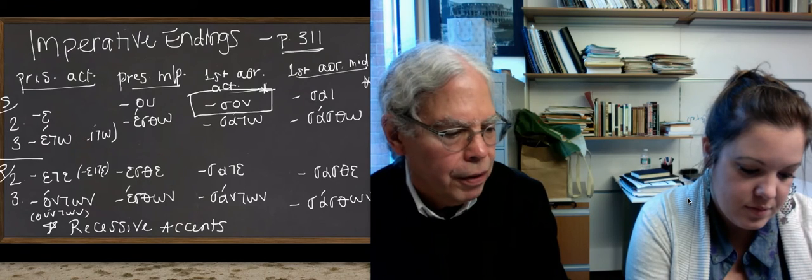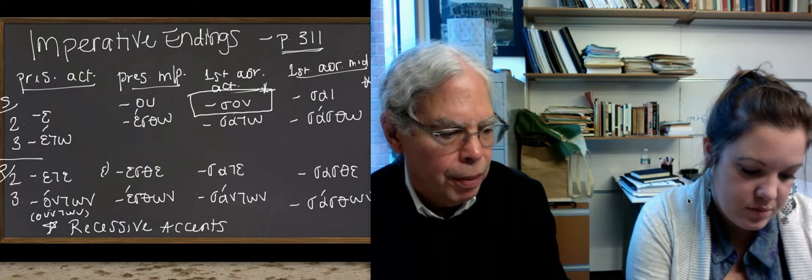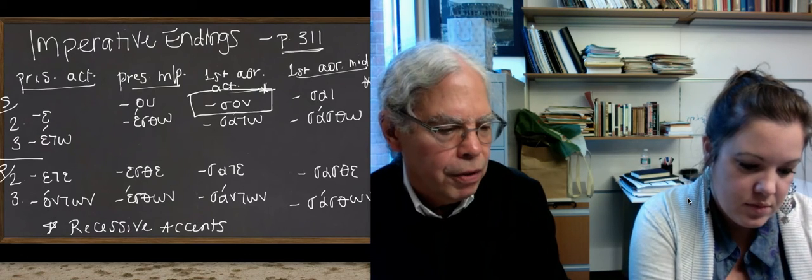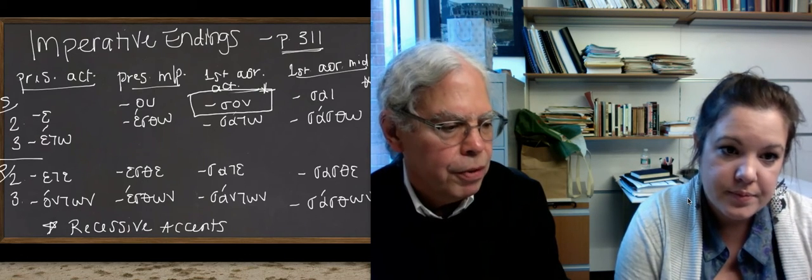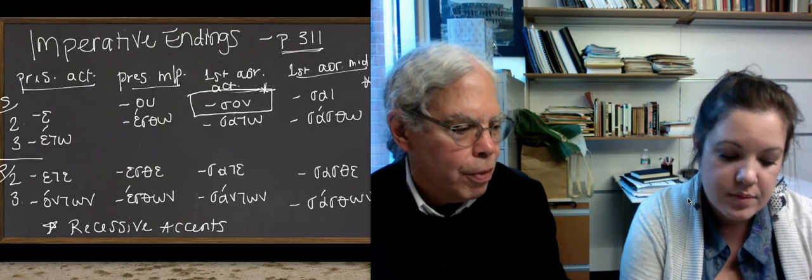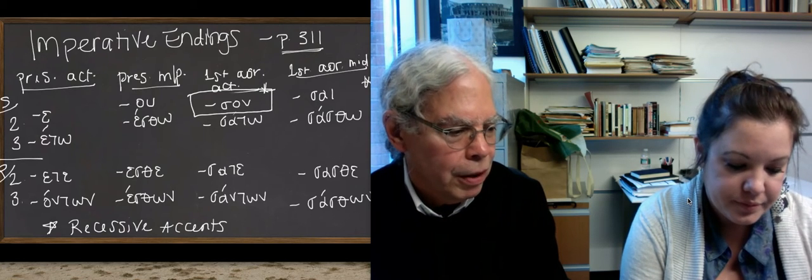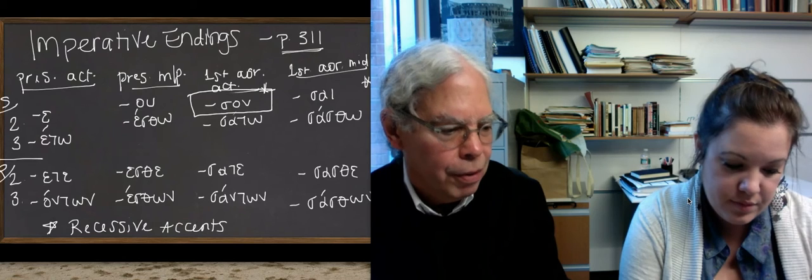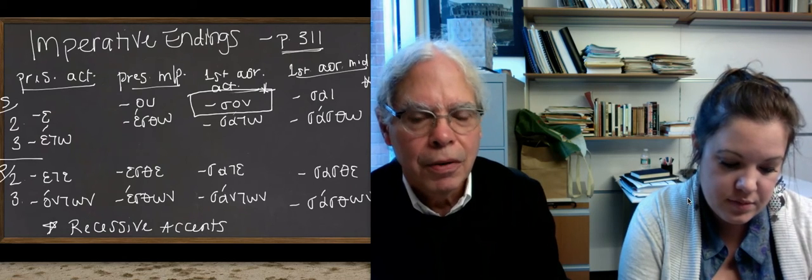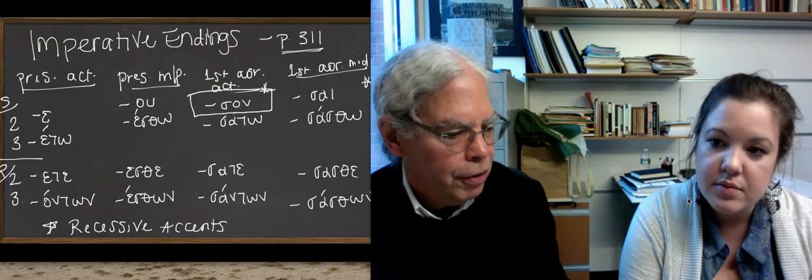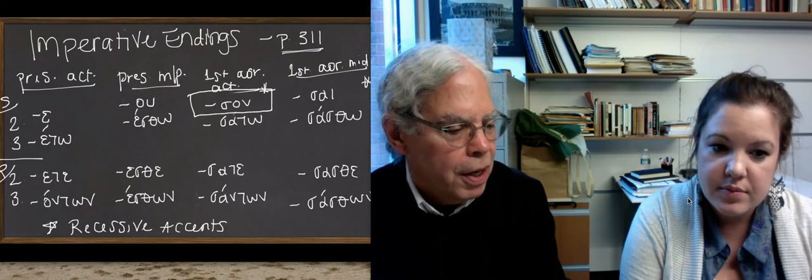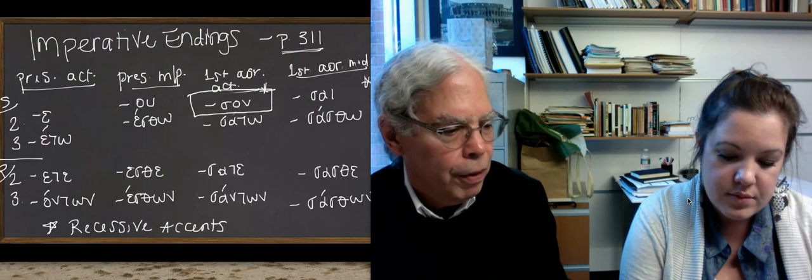And, you know, the same thing happens with the middle passive endings. I don't think, you know, the principles that we've taught you about how to deal with contract verbs will work just fine. When it comes to the omicron contract verbs, what are you going to get? You're going to get U everywhere: dēlou, dēloutō, dēloute, and dēlountōn. And so forth. So I think you can pretty much figure your way through these.